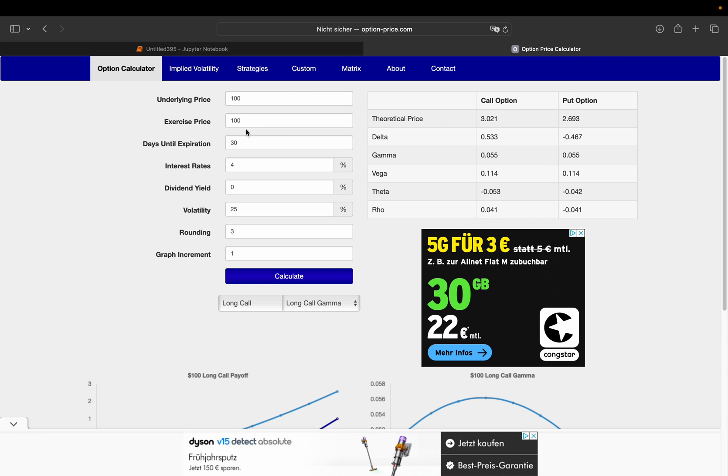So, let's just sense check or double check that with an online option price calculator. So, you see underlying exercise strike, 100 days until expiration, 34% interest, 25% volatility.